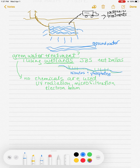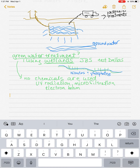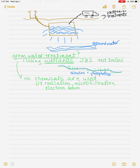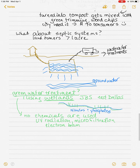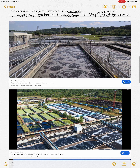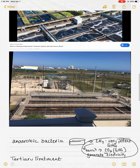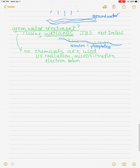Most of the energy used in water treatment comes from the blowers that blow oxygen into the secondary treatment and from pumps. The blowing of oxygen into secondary treatment takes up the most energy. Most of the rest is done through gravity and doesn't require a lot of energy.